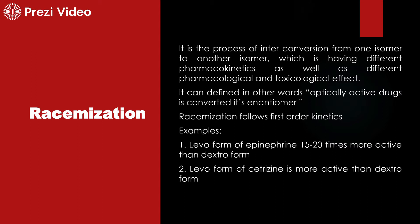Simply, racemization means conversion — conversion from one optically active form to another optically active form. By optically active form we mean enantiomers. So racemization is the process of conversion of one enantiomeric form into another enantiomeric form.